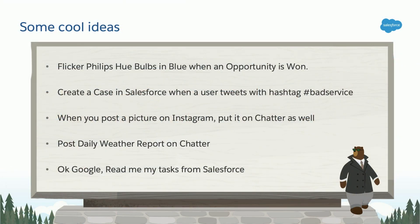On the screen you can see some fun use cases. For example, if your opportunity is won in Salesforce and you have a smart bulb, you can get it flickering. For more business-oriented use cases, say you have a Twitter handle and a customer posts tweets with a certain hashtag — you might want to automatically convert them to cases so an agent can follow up. And the other way around, you can have Google communicate with Salesforce: say 'Google, get me my tasks from Salesforce in the morning' and it'll show you how many tasks you have.